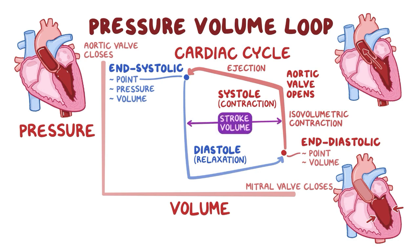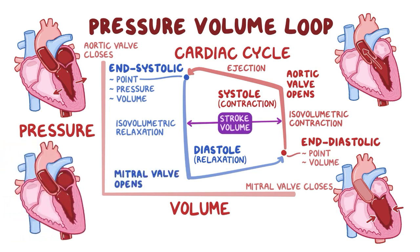After that, ventricular diastole begins, so the left ventricle muscle relaxes, making pressure fall. However, both the mitral and aortic valves are closed, so the volume remains constant. This phase is isovolumetric relaxation, and the atria fill with blood during this time. Eventually, the pressure in the left atrium exceeds that of the left ventricle, so the mitral valve opens and blood flows into the left ventricle. As the left ventricle fills with blood, left ventricle volume rises back to its end diastolic volume, and the pressure increases only slightly. This relaxation phase continues until the mitral valve closes, letting the loop start all over again.